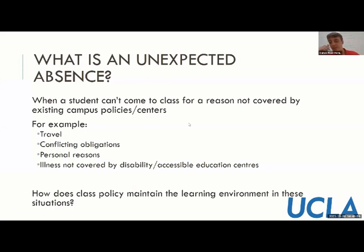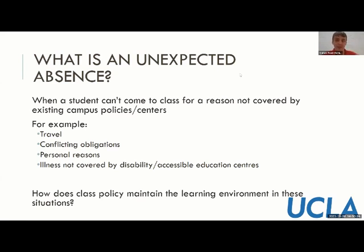When I say unexpected absences, I mean instances where a student doesn't come to class and the mechanisms that govern that aren't already covered by some broader institutional policy — things like travel, personal reasons, or illness, but not those covered by things like a Center for Accessible Education. These absences were particularly interesting to me because I was really interested in how you maintain the learning environment when a student doesn't come to class, and I felt there was a frequency of good students missing out on learning for reasons entirely outside the class.